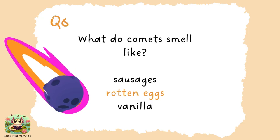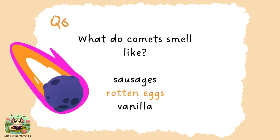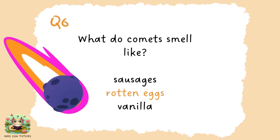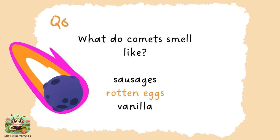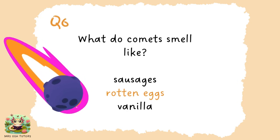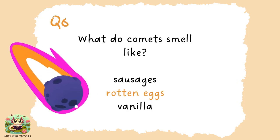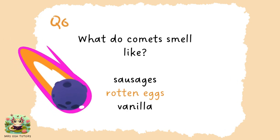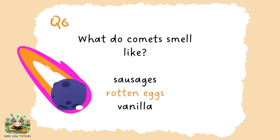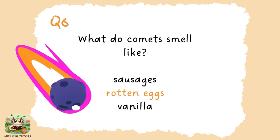A comet actually smells like rotten eggs, urine, burning matches or even almonds. It's because of the chemicals that surround them — one of which is sulfur dioxide, which gives it its powerful smell.